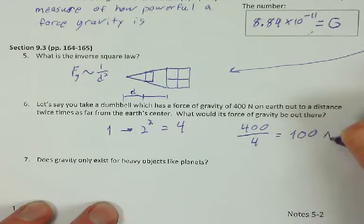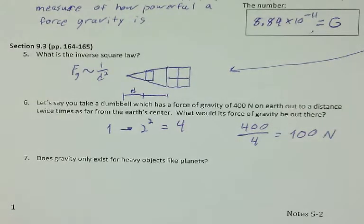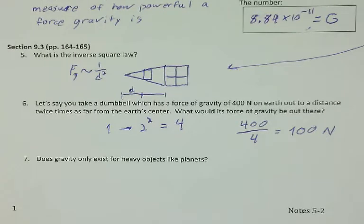If you want to understand how the inverse square law works, if you were to go to double the distance from the Earth's center that you are right now, you would weigh one-fourth what you weigh currently. So, if you weighed 120 pounds, you would only weigh 30 pounds when you got double the distance away from the Earth's surface. So, it shows that as you get further away, it doubles, or it doesn't double, it squares whatever the distance is.